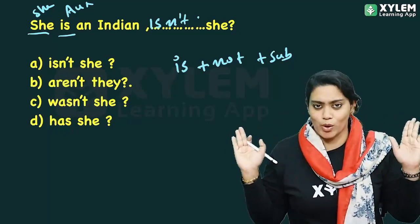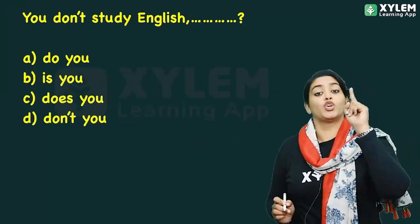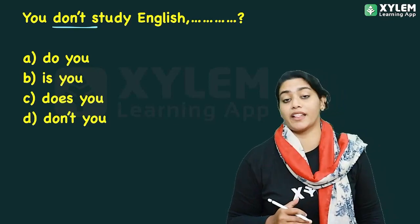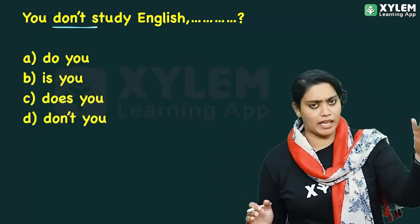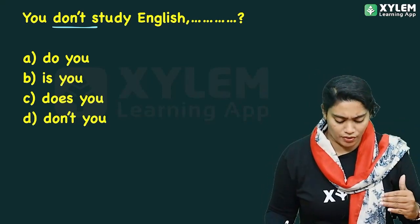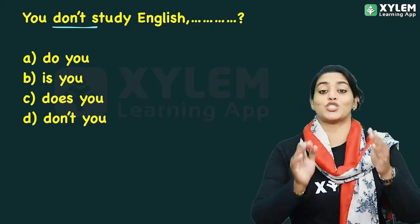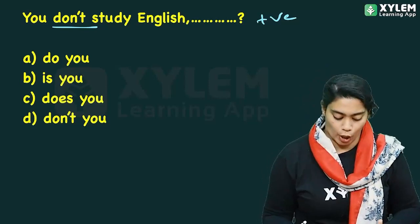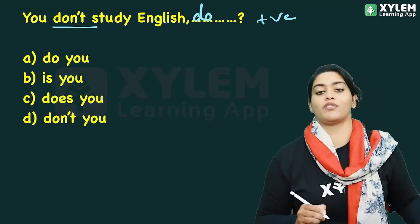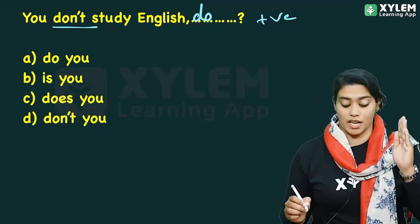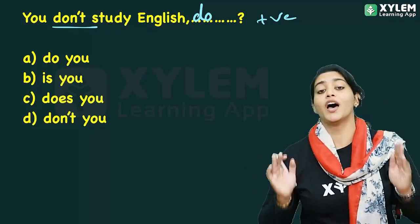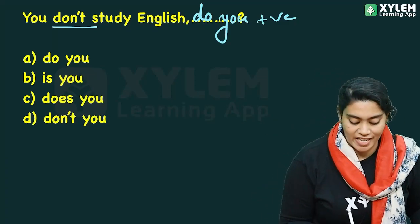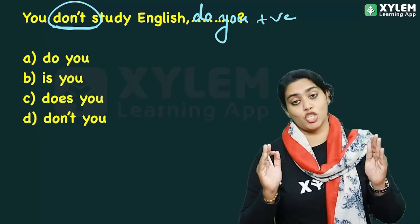Next example: 'You don't study English.' The sentence is negative, so the tag should be positive. 'Don't' is the auxiliary verb. We take the auxiliary verb and add the pronoun — that gives us 'do you.' Since the sentence is negative, the tag is positive: 'do you.'